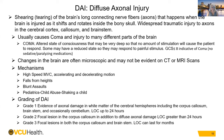Changes in the brain from DAI are often microscopic and may not be evident on CT or MRI — usually an MRI is used to look for DAI. Mechanisms include high-speed motor vehicle collisions with accelerating and decelerating motion, falls from heights, blunt assault (pistol-whipping, being struck with a bat), and for pediatrics, child abuse and shaking. DAI grades: Grade 1 — axonal damage in white matter of cerebral hemispheres including corpus callosum and brainstem, LOC usually up to 24 hours.